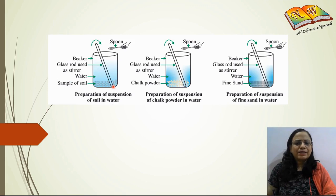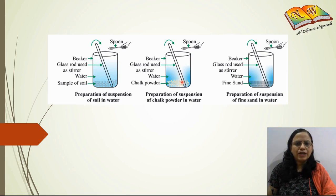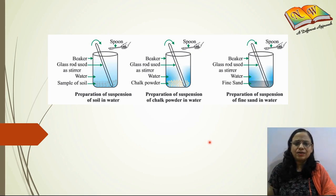In the second part of the experiment, we will be preparing suspensions. In the first beaker we will add some soil in water and stir it with a glass rod. In the second beaker we will add some chalk powder and stir it. In the third beaker we will add some fine sand to the water and stir it with a glass rod. Let us see the observations now.